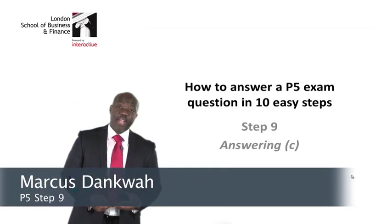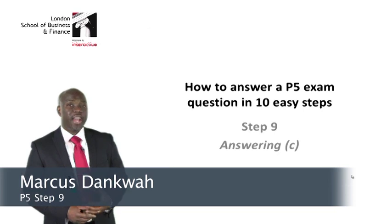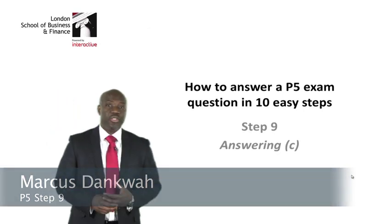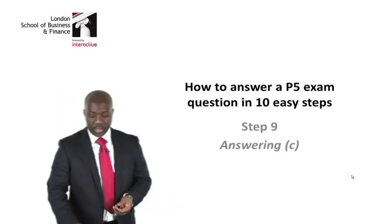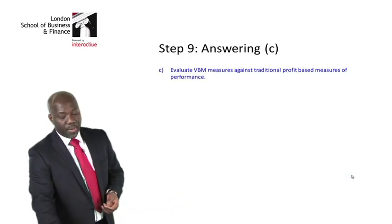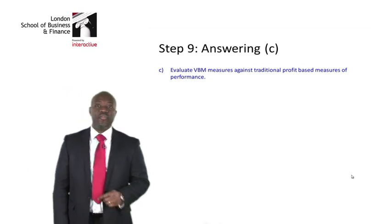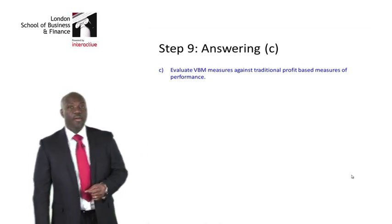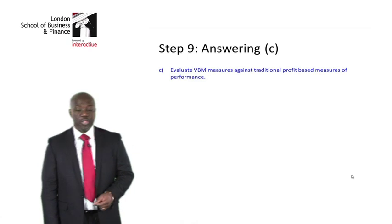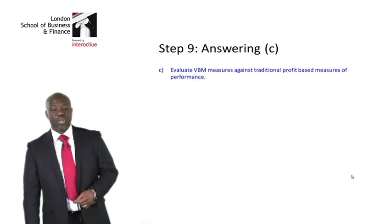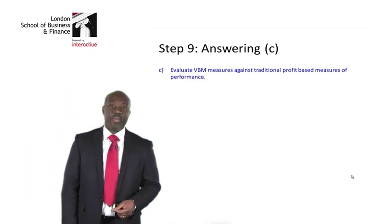Step 9. In step 9, I'll be using our information to answer the C part of the question. The C part of the question is asking me to evaluate value-based management measures against the traditional profit-based measures of performance.